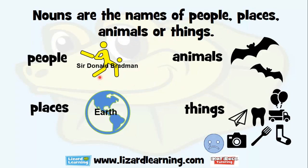Now, the names of people: batsman, captain, Sir Donald Bradman. Animals: bats, dogs, pigs, sheep, horses, cows, snakes, crickets, armadillo, cat — which I have one of here.